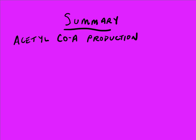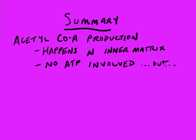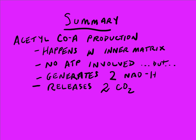Let's summarize acetyl-CoA production. It happens in the inner matrix — that's where the pyruvate diffuses and where the chemical reactions occur. No ATP is involved, but two NADHs are generated and two CO2s are released. The energy released from the further breakdown of the pyruvates went into these NADH bonds. These are high-energy molecules; they've harnessed the energy from the broken carbon-to-carbon bonds in those pyruvates.